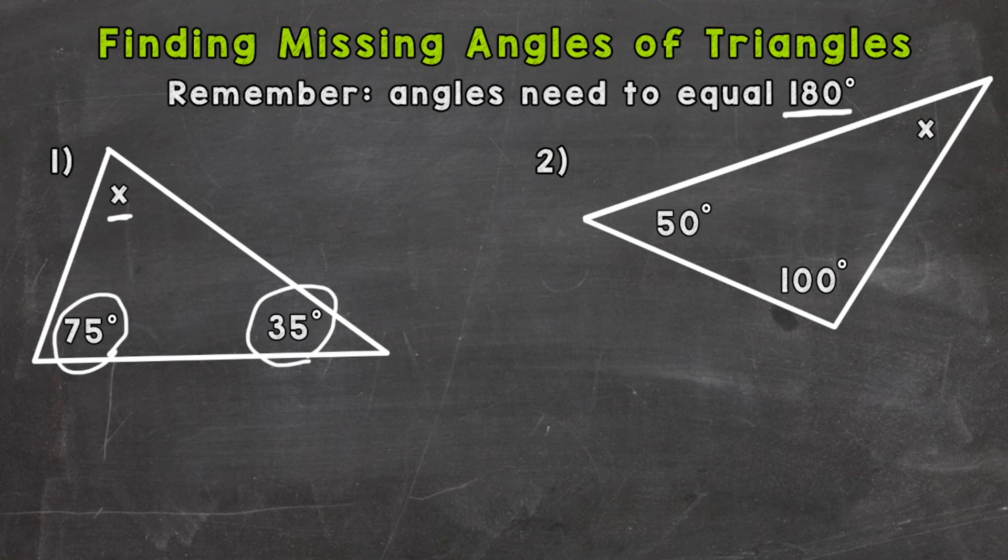So we need to add what we're given together. So 75 plus 35 gets us 110 degrees, so we know we have 110 degrees out of the 180 right now. So what we need to do now is take 180 degrees and subtract that 110.